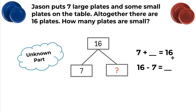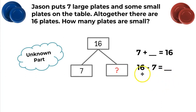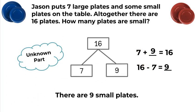Another way to solve this would be to take the 16 plates in all and subtract the seven plates. A whole minus a part will always give you the other part. So if I take the total and subtract the large plates, I will end up with the number of small plates. I know my math facts, and I know that seven plus nine is 16, so 16 minus seven is also nine. There are nine small plates.